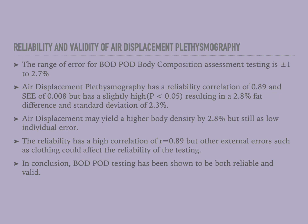Reliability and validity of air displacement plethysmography: the range of error for BODPOD body composition assessment testing ranges between plus or minus 1 to 2.7 percent, which is considered really low and good. The air displacement plethysmography has a high reliability correlation of 0.89 and SEE of 0.008. It has a slightly high p-value using 0.05, which results in a 2.8 percent fat difference and a standard deviation of 2.3 percent. The air displacement plethysmography may yield a higher body density by 2.8 percent, but still a low individual error.